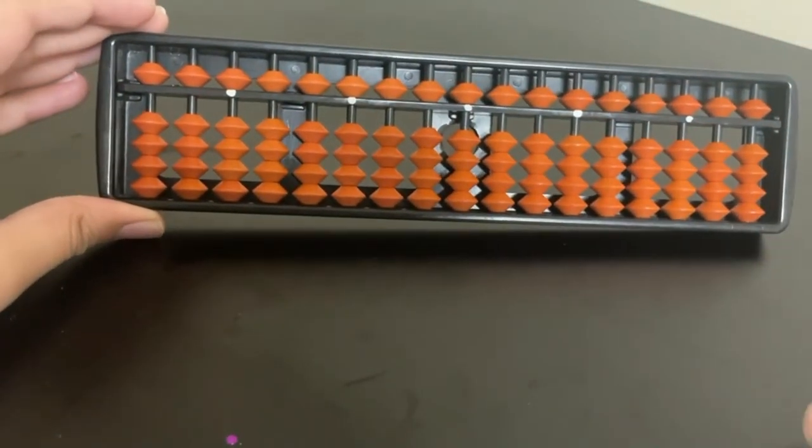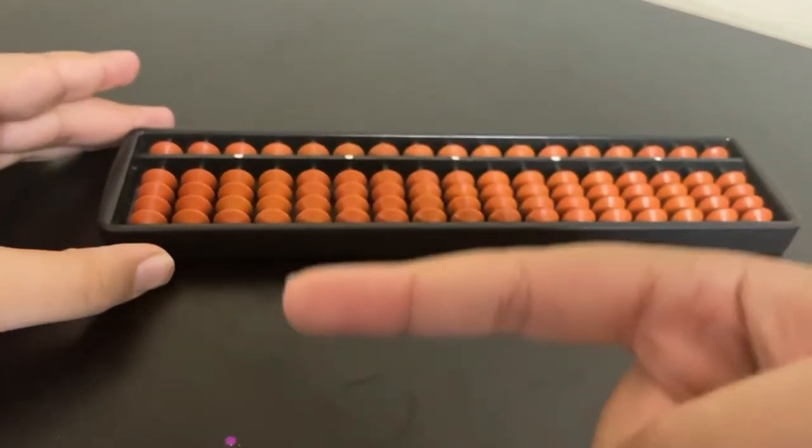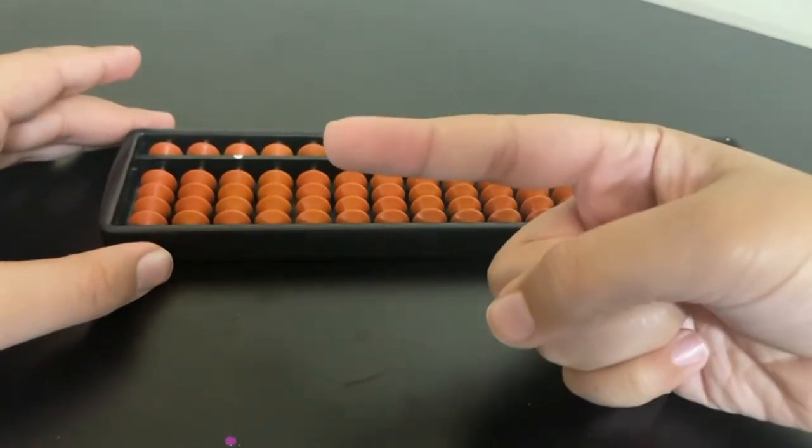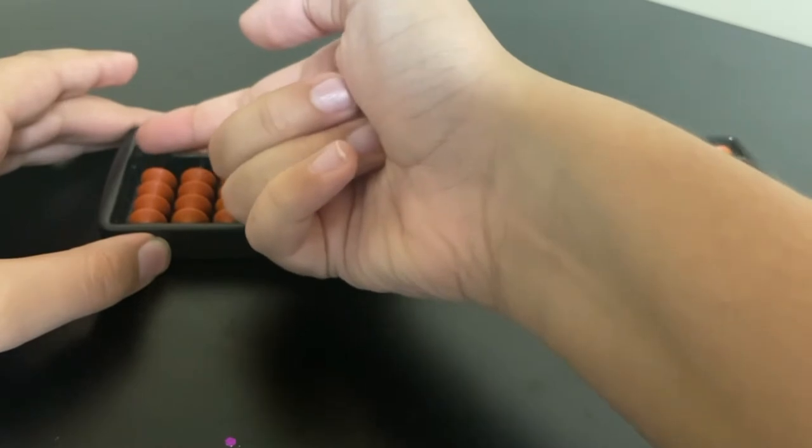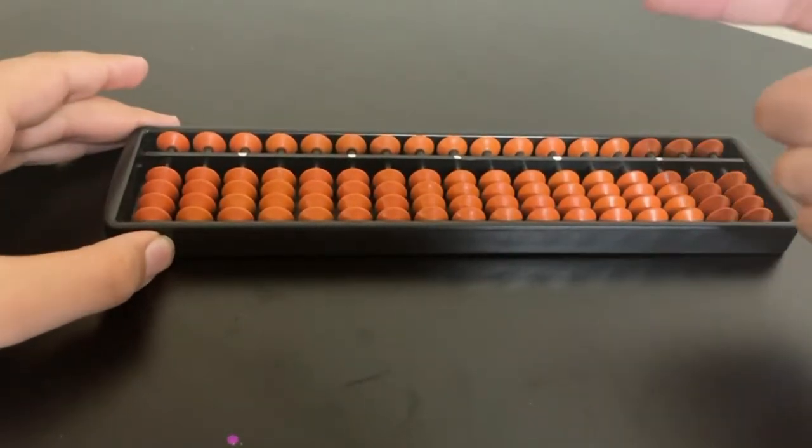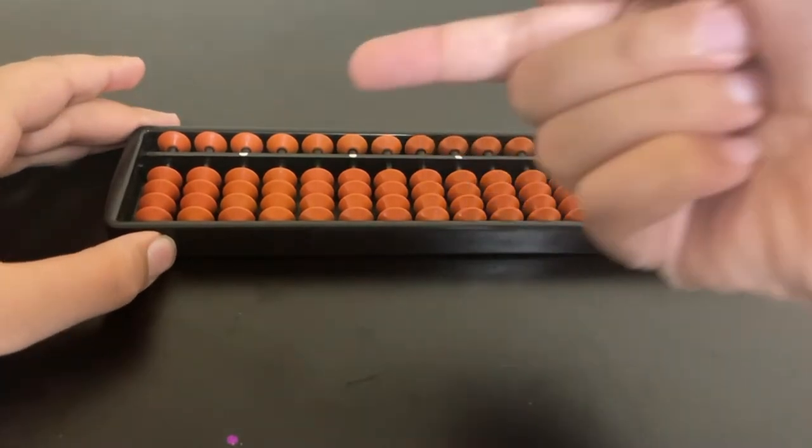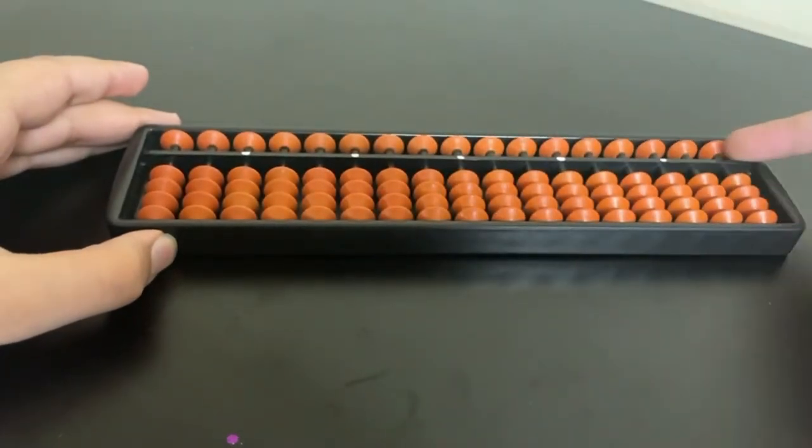What you're going to do is take your right hand pointer finger and lay it down like a dead man and just do it like this. If you do it sideways you can break your nail, so it's best if you do it like there's a dead man and just roll it across so that all the beads go back up.